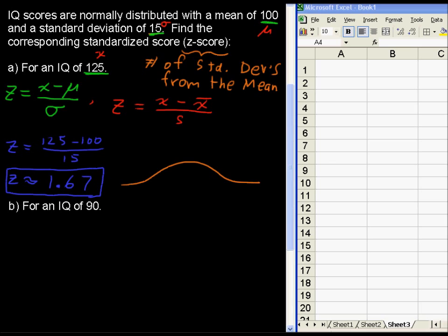If you have a normally distributed population, the mean is right at the center. Well, z for standardized is right at the center, because you are zero, you are right at the standard deviation, or right at the mean, zero standard deviations from the mean.